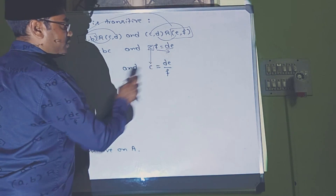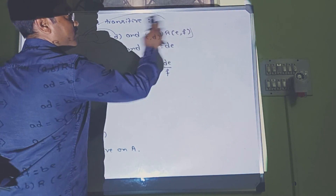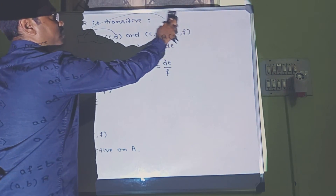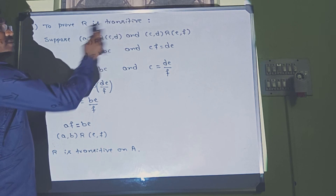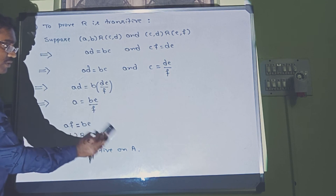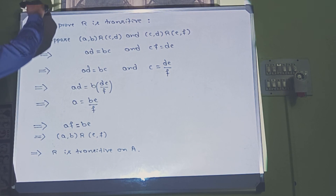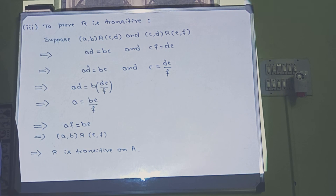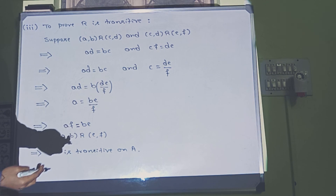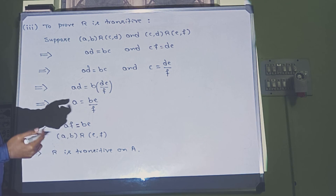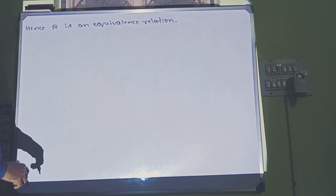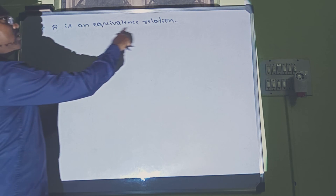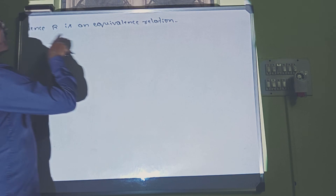We have proved R is reflexive, symmetric, and transitive. Any relation which satisfies reflexive, symmetric, and transitive is called an equivalence relation. Hence, R is an equivalence relation. We have solved this problem.